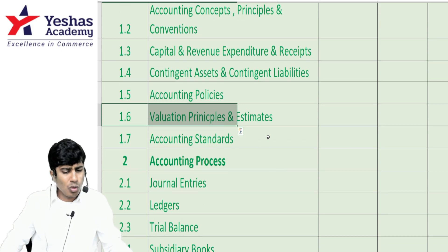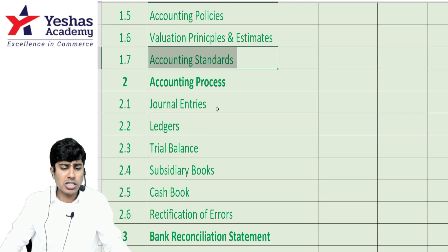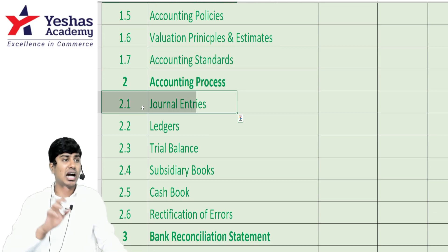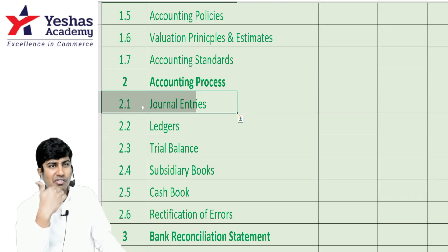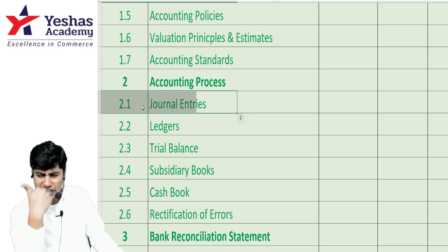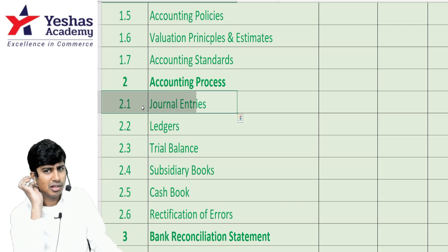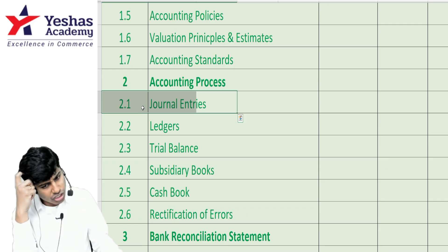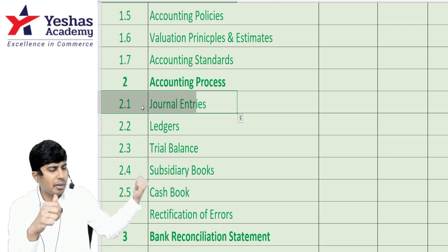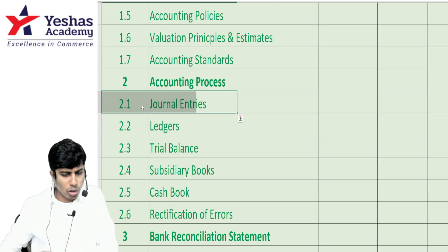Accounting standards — not much is needed there. For accounting process, journal entry-based questions can be asked as GST-based journal entries. If a straight journal entry question comes, that's like a lottery — be very happy. Otherwise, it will usually be GST-based journal entries, which we'll discuss separately in detail. Ledgers will be part of a bigger question.